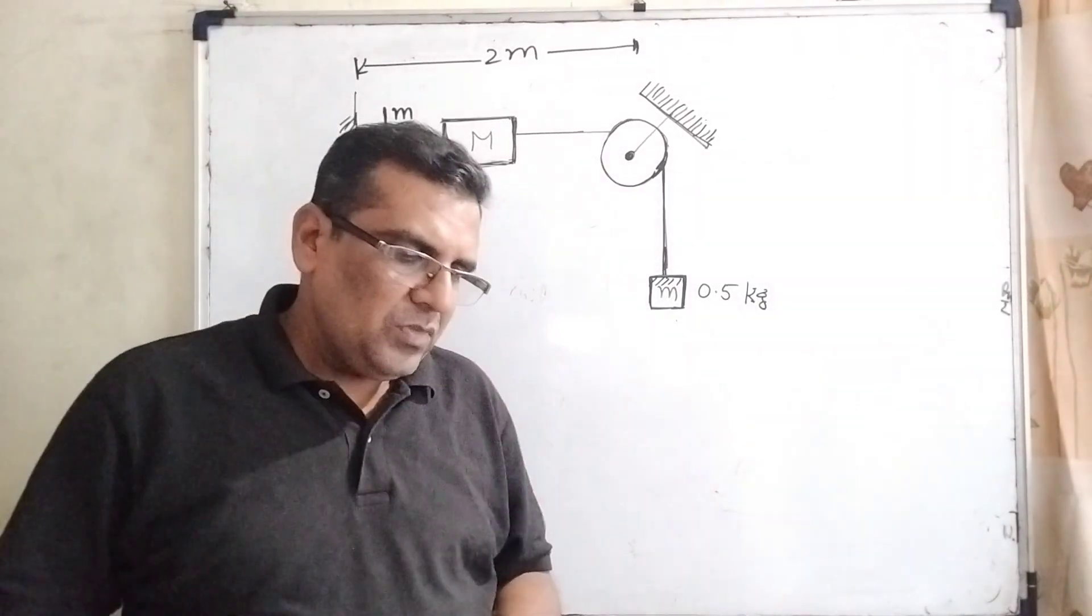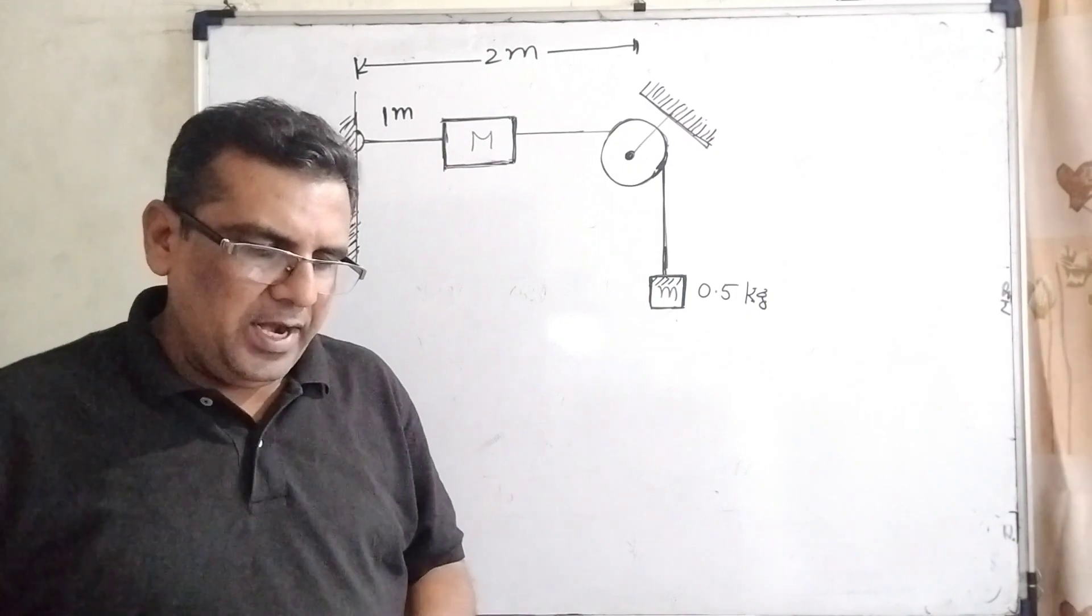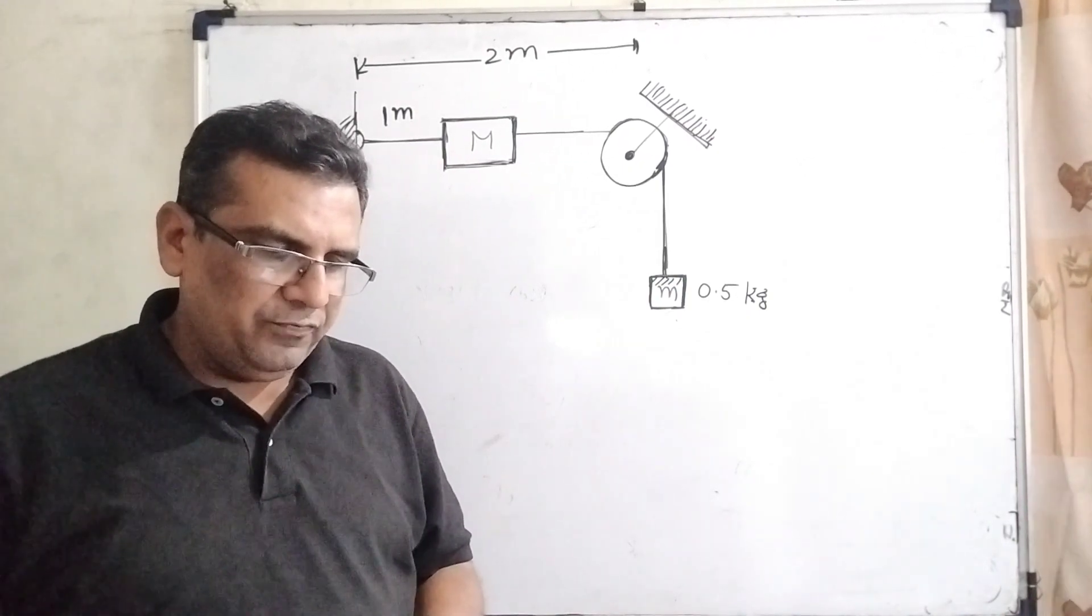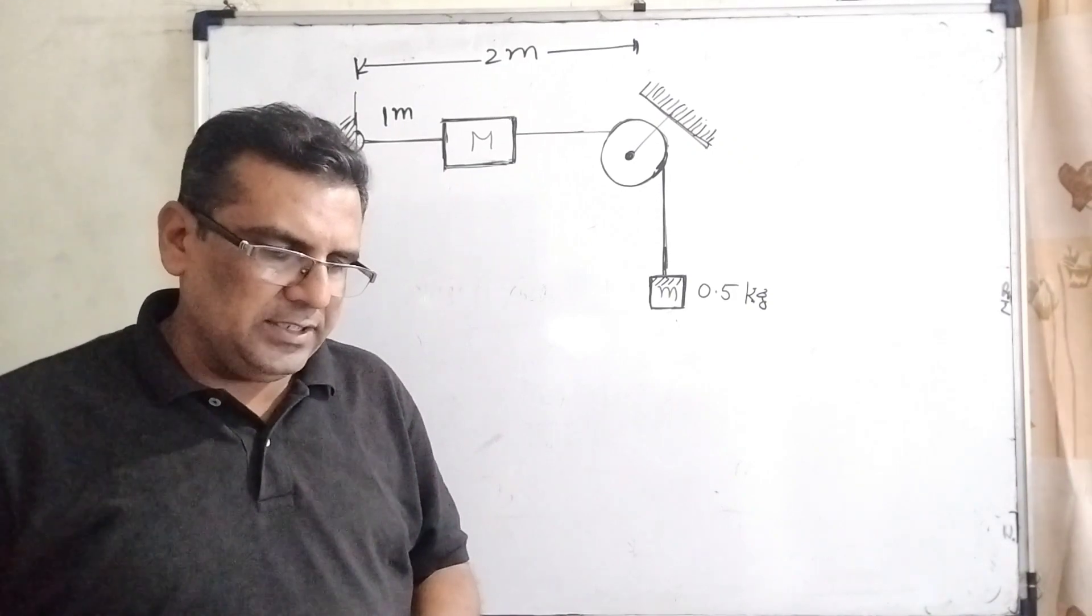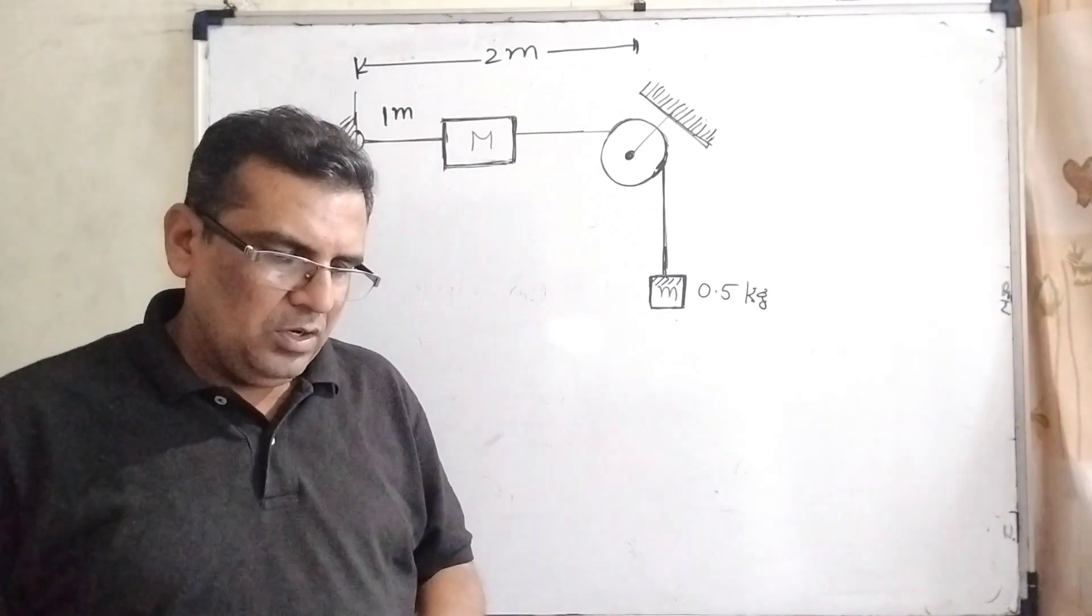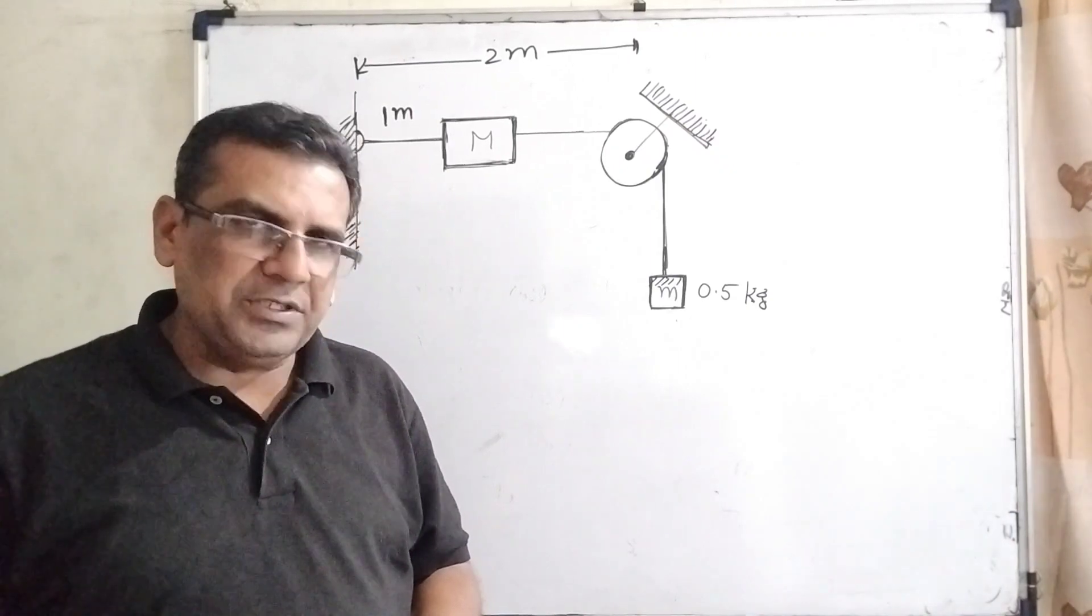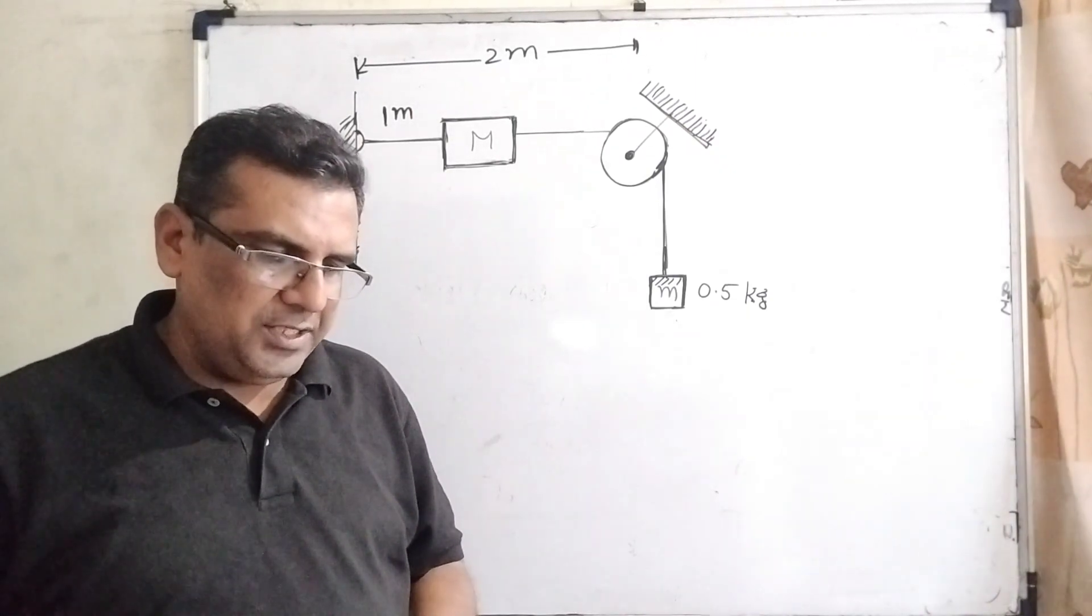Here is the question: A string with one end fixed on a rigid wall passing over a fixed frictionless pulley at a distance of 2 meters from the wall has a point mass capital M equal to 2 kilograms attached.